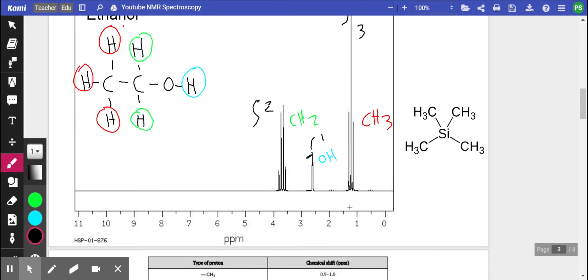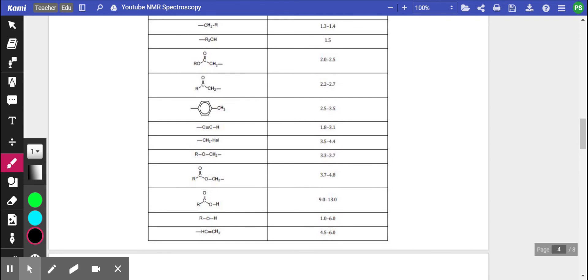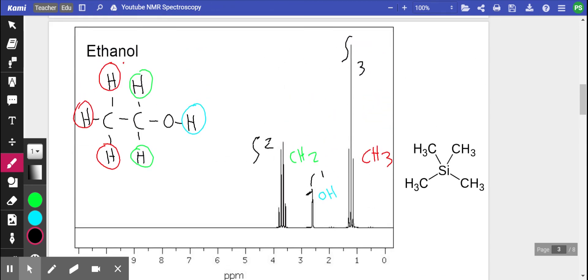Now the OH group is quite broad but it is between 1 and 6. That really depends on the presence of other electronegative elements around it. So we see it at 2.5.